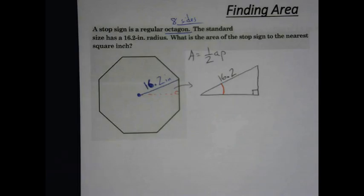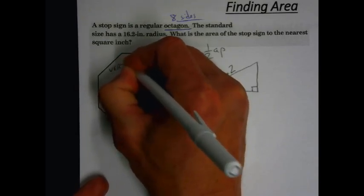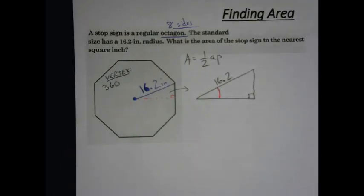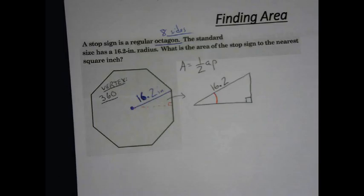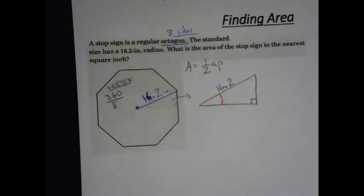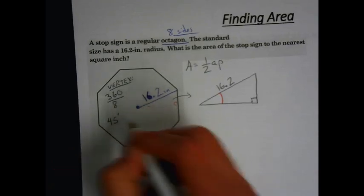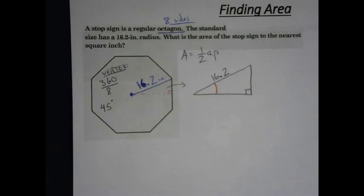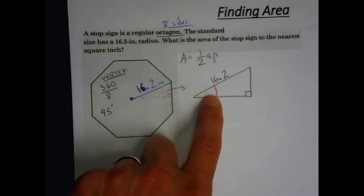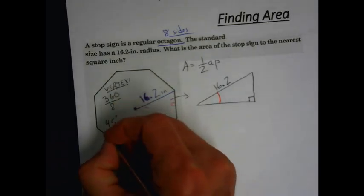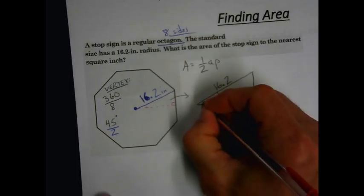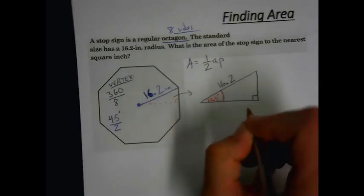To find the angle measure in the pop-out triangle, we need our vertex angle. We find the vertex angle by dividing 360 degrees by the number of sides. So 360 divided by 8 gives us a vertex angle of 45 degrees. Now, our pop-out triangle is made by the apothem, which bisects the vertex angle. So the vertex angle of 45 degrees is divided by 2, giving us 22.5 degrees as the angle in our pop-out triangle.